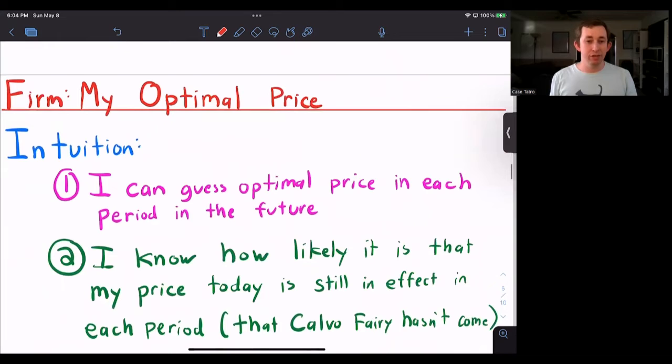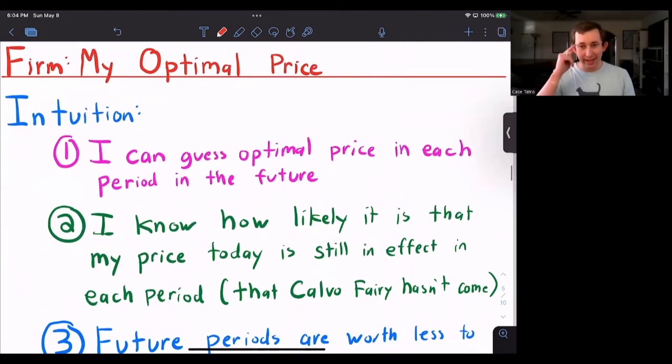What is the intuition for the optimal price? Well, I can guess what my optimal price would like to be at each period in the future. If the Calvo ferry doesn't visit me in each of those periods, I also know how likely it is that the price I set today is still in effect in those future periods or the probability that the Calvo ferry hasn't yet come in each future period.